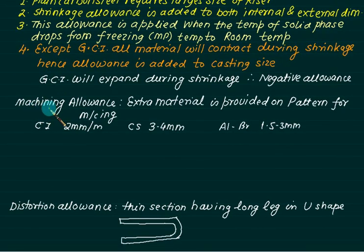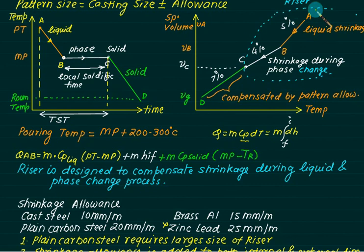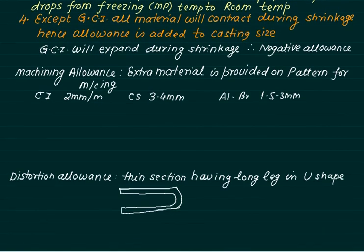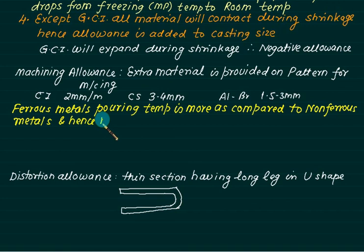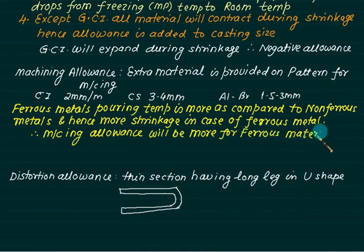For machining allowances, we have two types of materials: ferrous and non-ferrous. For one material the pouring temperature is very high. If the pouring temperature is high, the shrinkage is large; if the pouring temperature is less, the shrinkage is also less. In the case of ferrous metal, the pouring temperature is more compared to non-ferrous, and hence there is more shrinkage. Therefore, the machining allowance will be more for ferrous materials compared to non-ferrous materials.